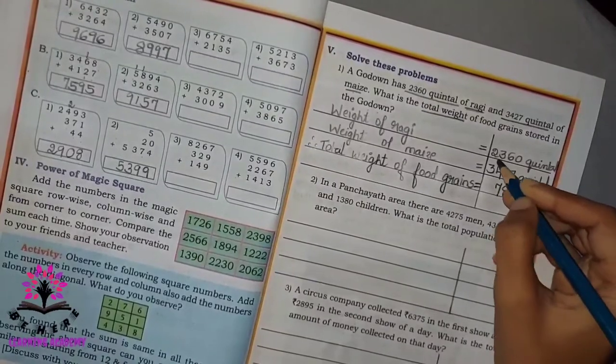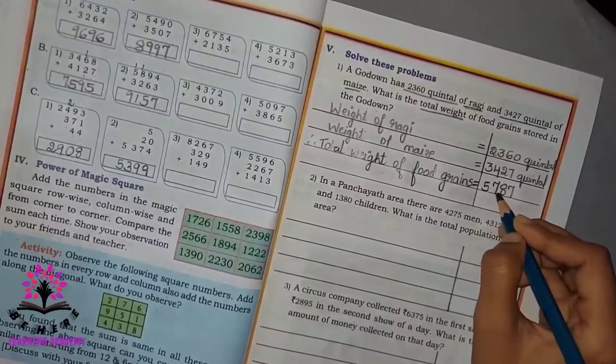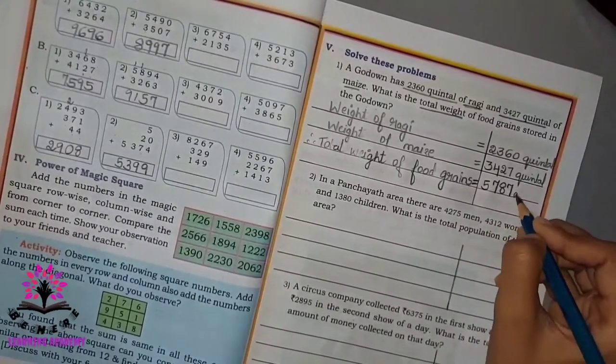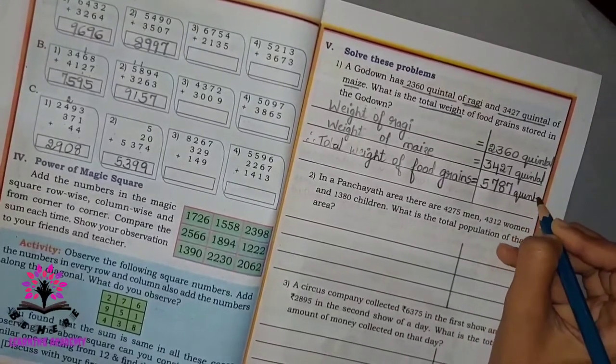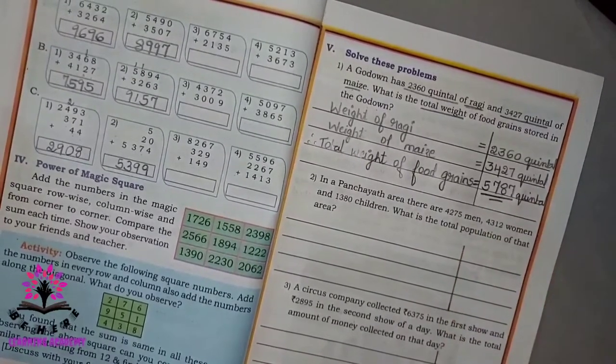So the answer is 5787 quintal. Underline the answer.